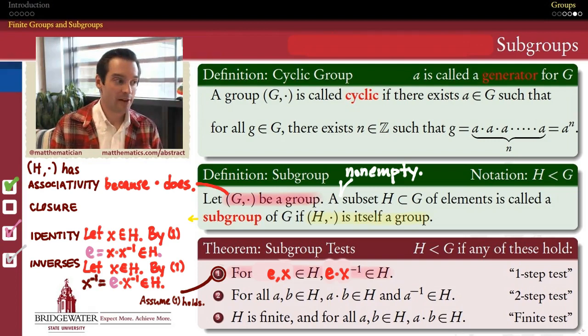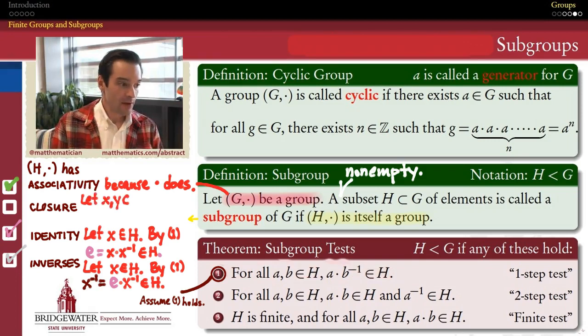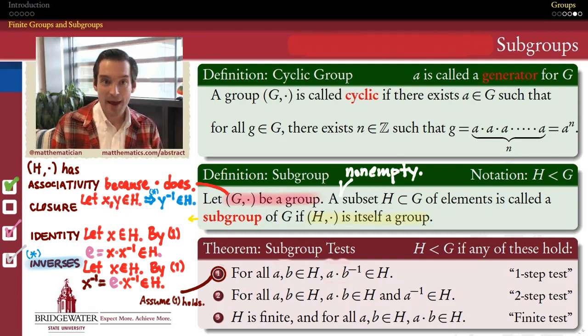The only one that's left then is closure. How do we know that given any two elements of H, that their product belongs to H? So now I have to pick up two elements of H. Again, H is non-empty, so I can pick up elements as much as I want. We don't know that these are different elements. That actually doesn't matter to our proof.